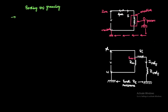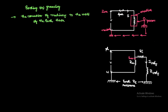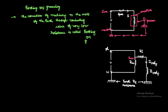First we will see what is the meaning of earthing. The connection of electrical machinery to the mass of the earth through a conducting wire of very low resistance is called earthing or grounding.